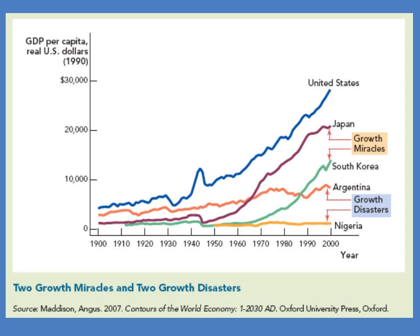We can see that there are growth miracles and growth disasters. Let's talk about growth miracles first. One of the very first was Japan. Here's Japan in the time after World War II — one of the poorest countries in the world, not much richer than Nigeria, certainly far less rich than the United States. But in the 1950s and 1960s, it has a tremendous catch-up period, until by the 1970s and 1980s it is growing as fast as the United States and has caught up a tremendous amount.